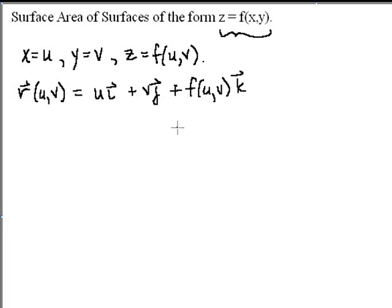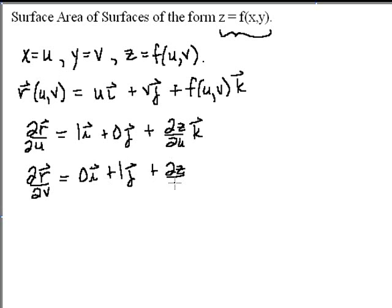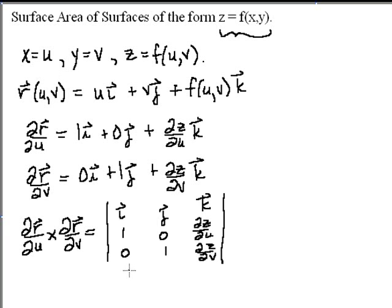If we take the partial derivative of r with respect to u, that gives us 1·i plus 0·j plus ∂z/∂u·k. And with respect to v, we get 0·i plus 1·j plus ∂z/∂v·k. To find the cross product, we take the determinant of this expression.